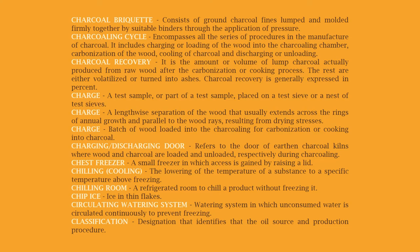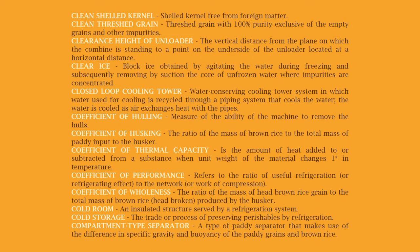Chip ice: ice in thin flakes. Circulating watering system: a watering system in which unconsumed water is circulated continuously to prevent freezing. Classification: a designation that identifies the oil source and production procedure. Clean shelled kernel: a shelled kernel free from foreign matter. Clean threshed grain: threshed grain with 100% purity, exclusive of empty grains and other impurities.